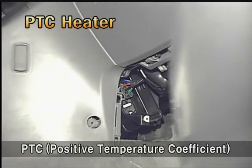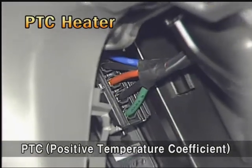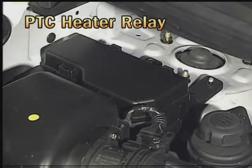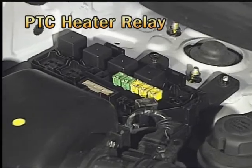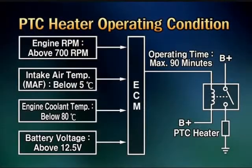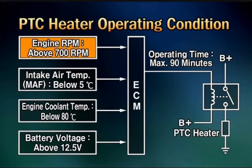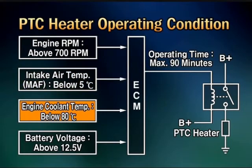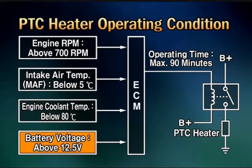PTC — positive temperature coefficient — heater is applied to diesel engines. The relay is located in the engine room. The operating conditions are as follows: the engine RPM is over 700, the intake air temperature is less than 5 degrees Celsius, the coolant temperature is less than 80 degrees Celsius, and the battery voltage is over 12.5 volts.